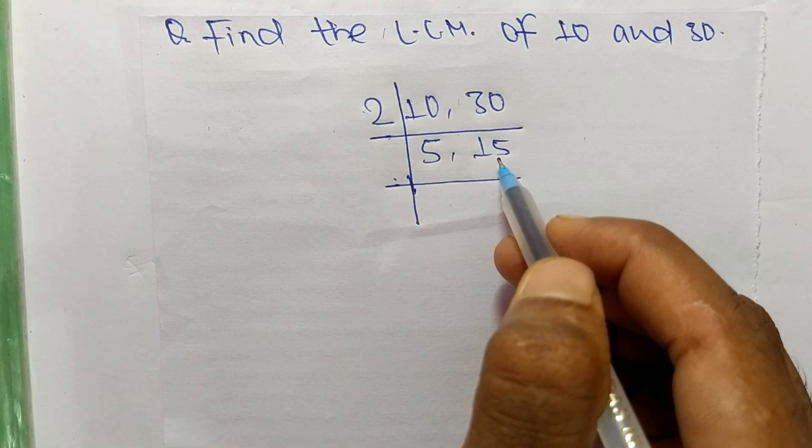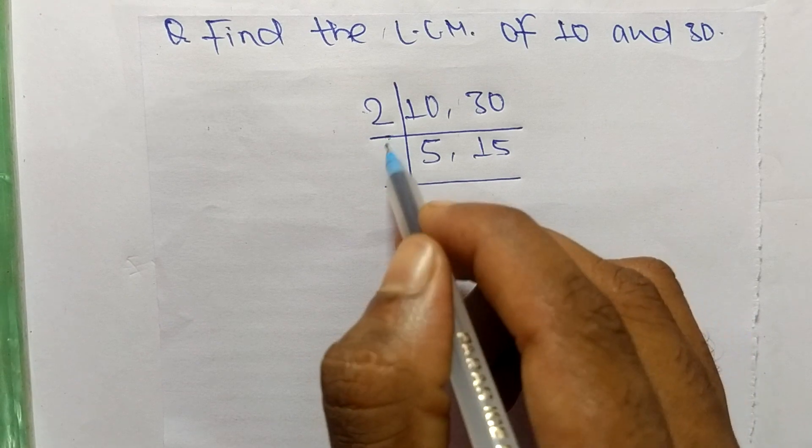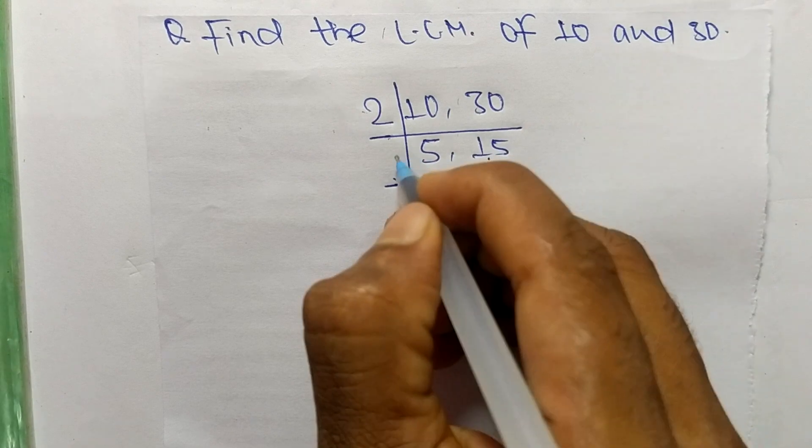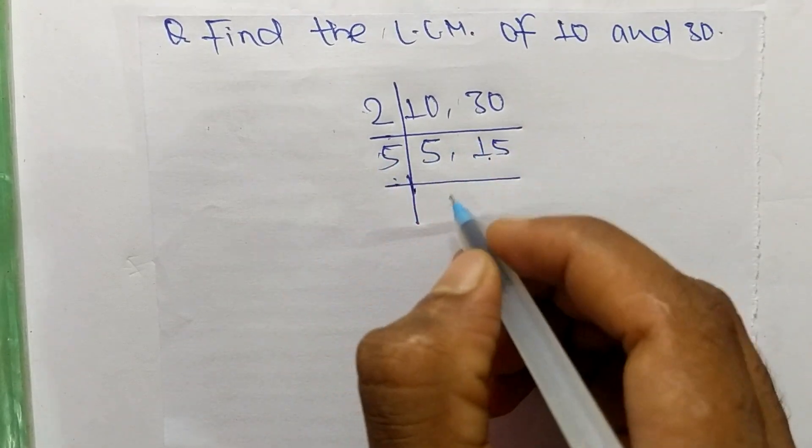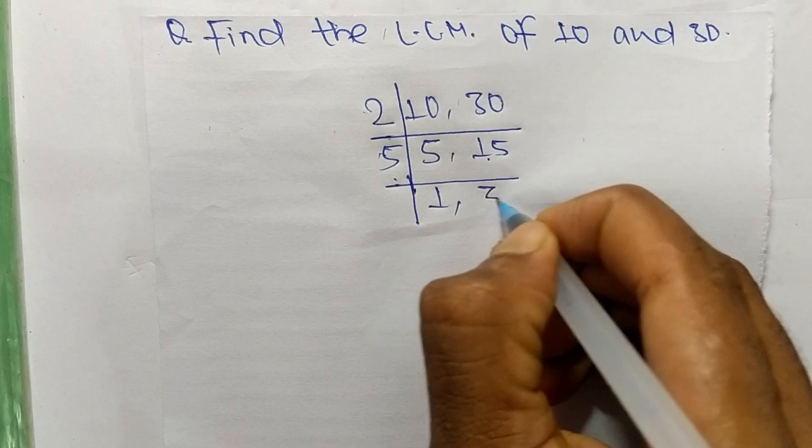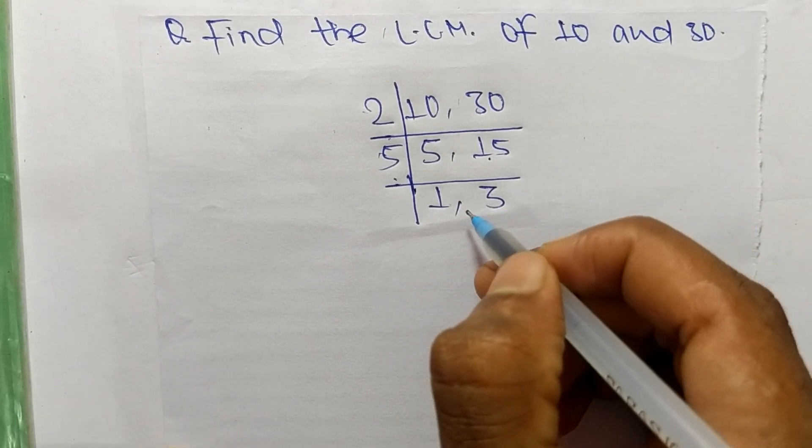So if we take 3, then 3 can divide 15 but can't divide 5. So we take here 5. So 5 times 1 means 5 and 5 times 3 means 15. So we get here 1 and 3.